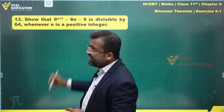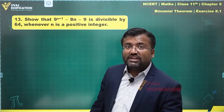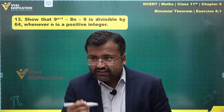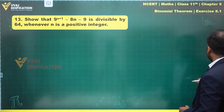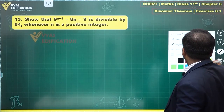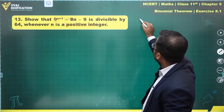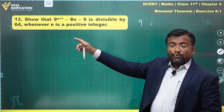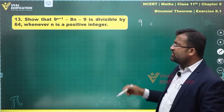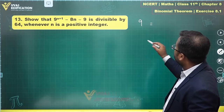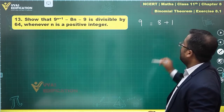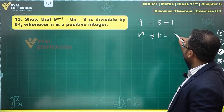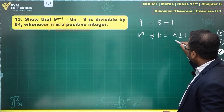The term 9^(n+1) is a bit complicated, which will require binomial expansion. For that, 9 should be written in binomial form as 8 plus 1. In such questions, the target is generally to write the base of 9 in a useful form. Since we want to divide by 64, which is 8 squared, 9 has to be written as 8 plus 1.